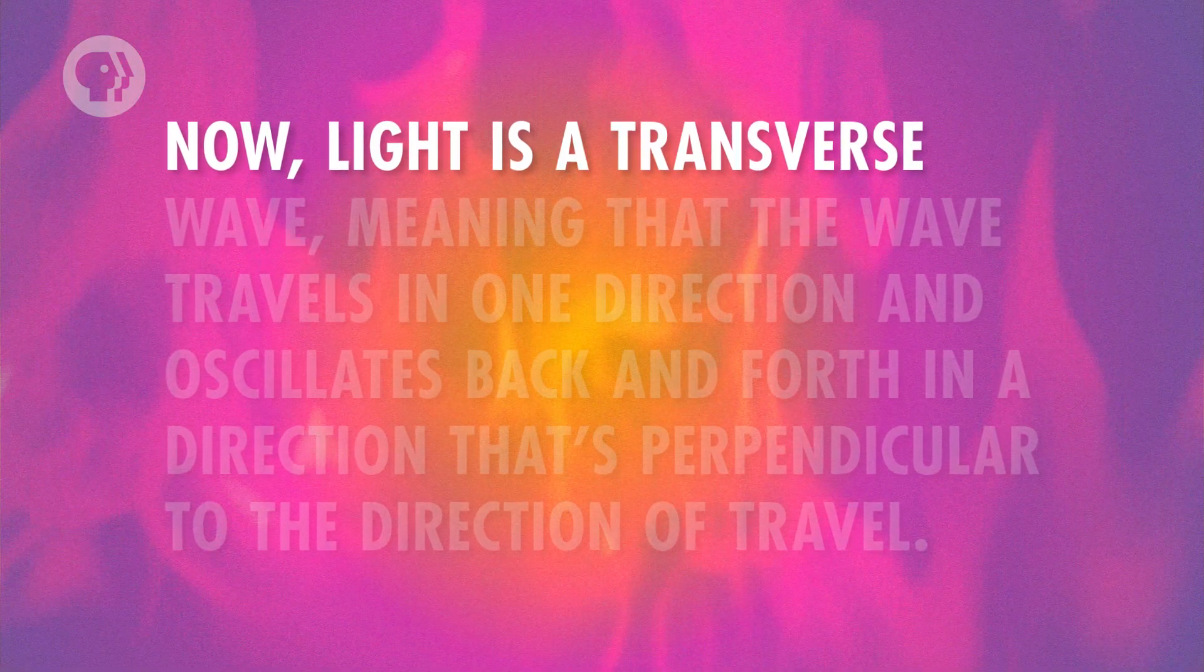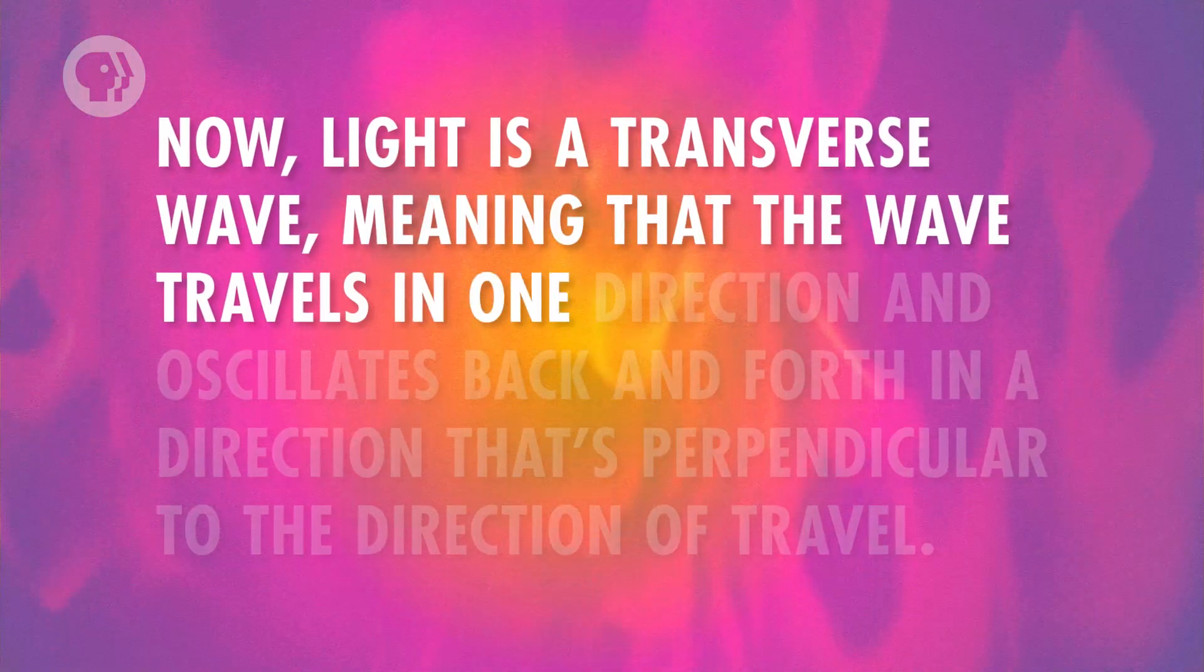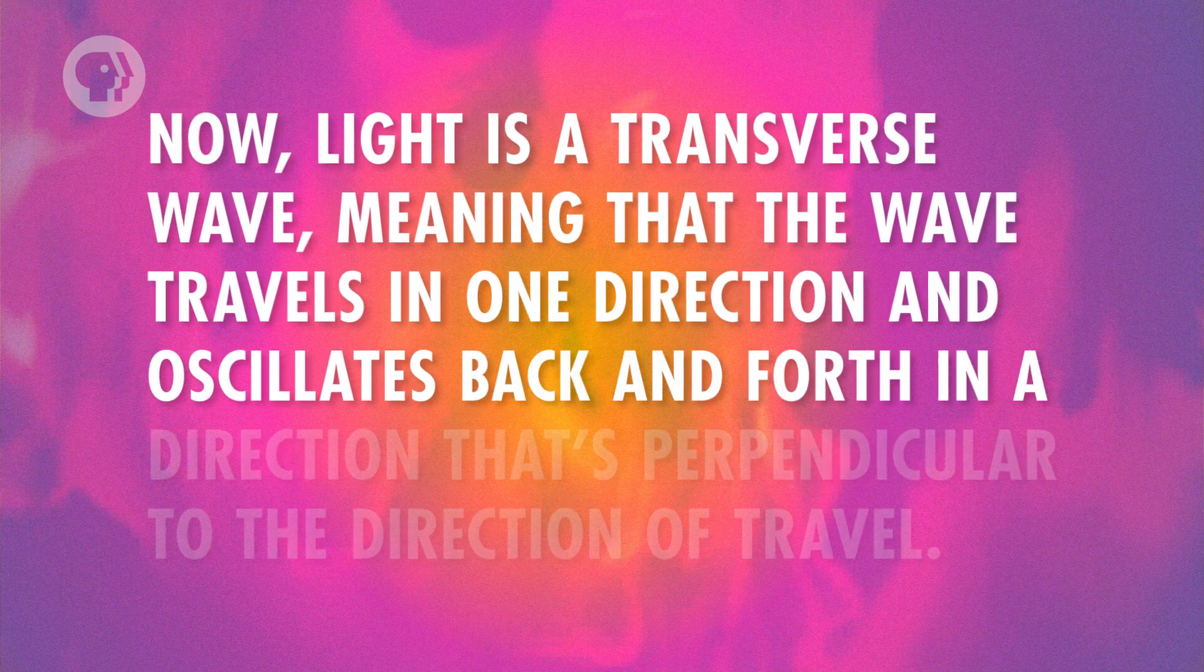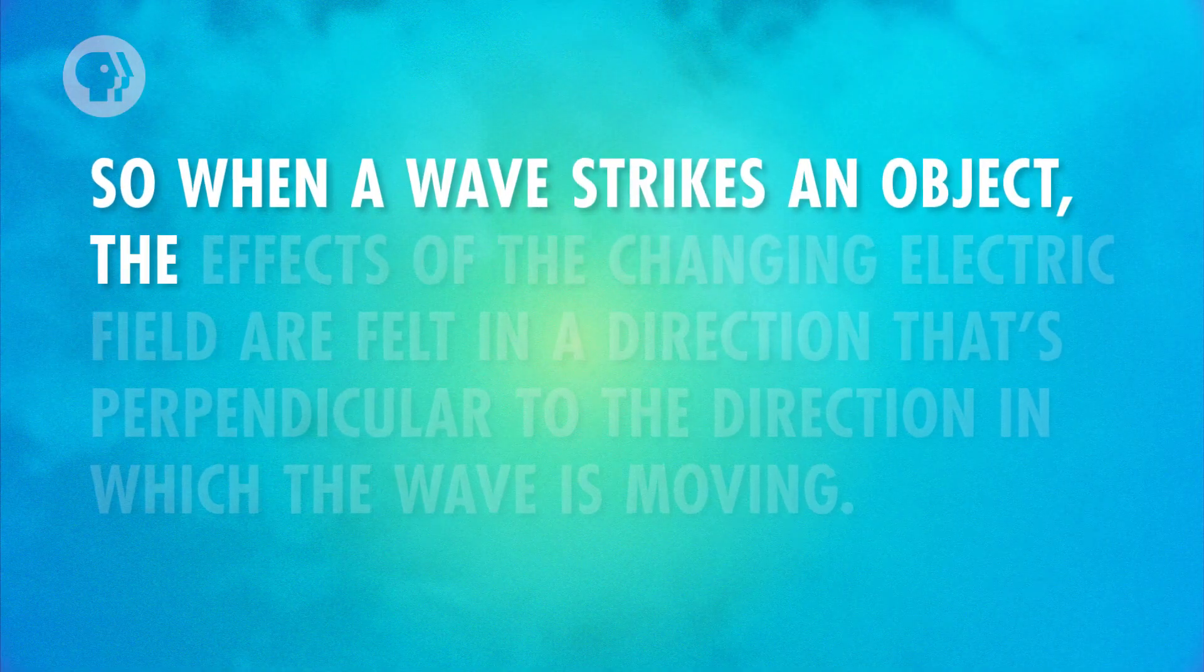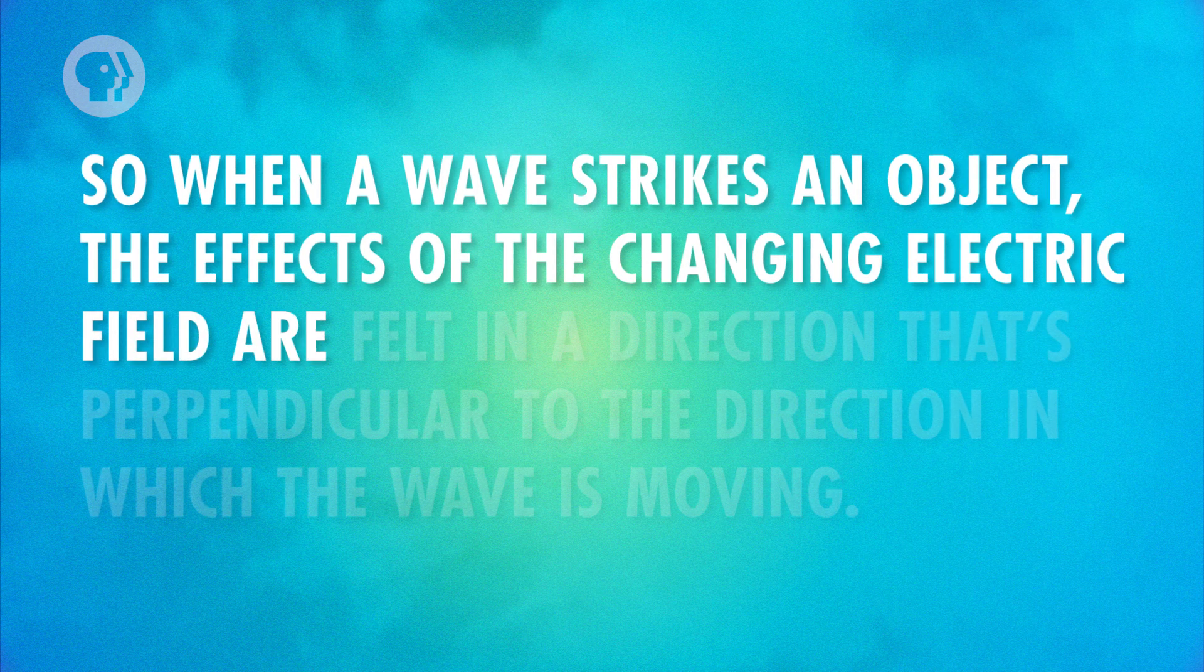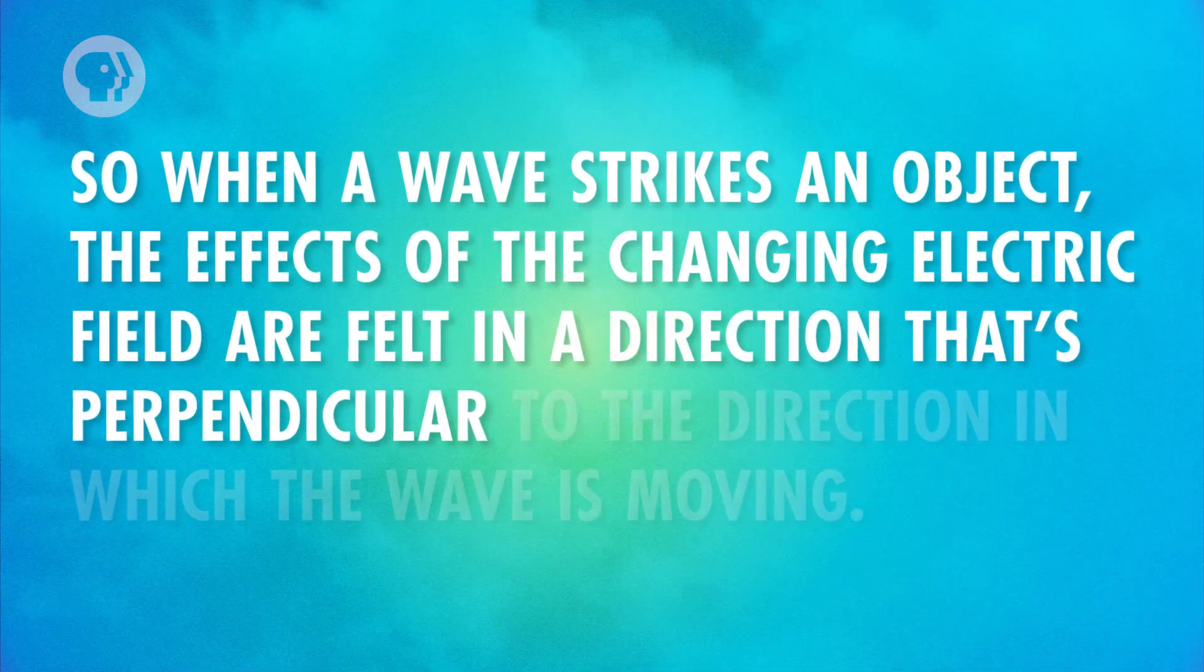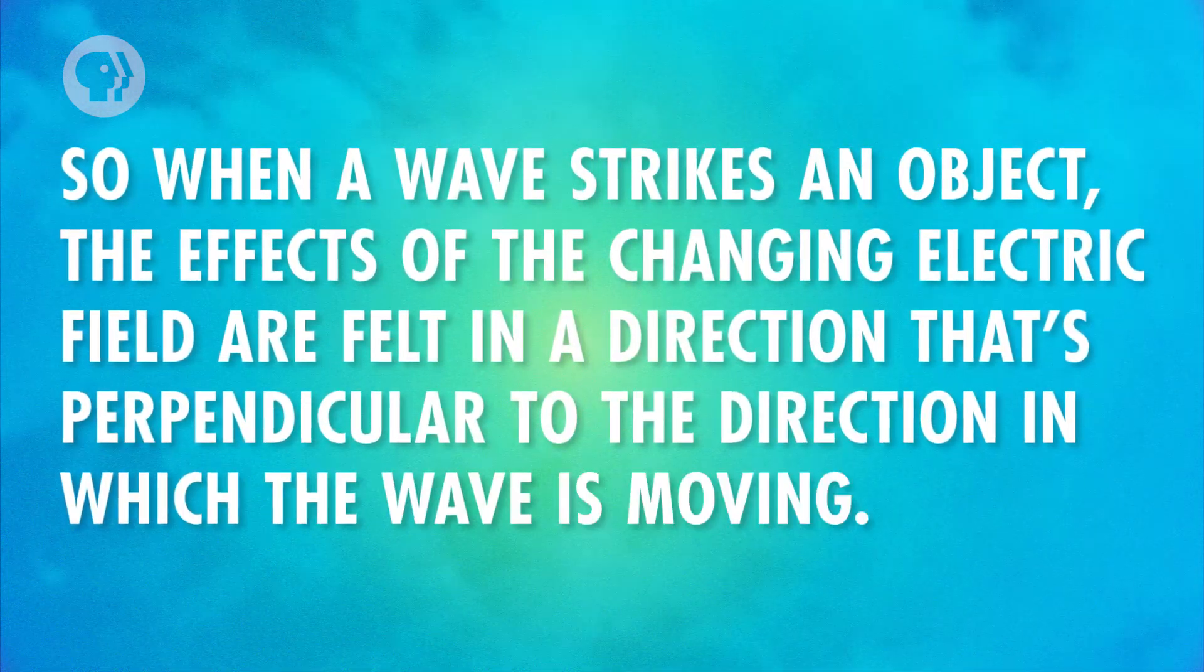Now, light is a transverse wave, meaning that the wave travels in one direction and oscillates back and forth in a direction that's perpendicular to the direction of travel. And like all electromagnetic waves, what's oscillating in a light wave is its electric field. So, when a wave strikes an object, the effects of the changing electric field are felt in a direction that's perpendicular to the direction in which the wave is moving.